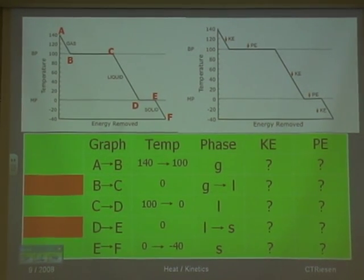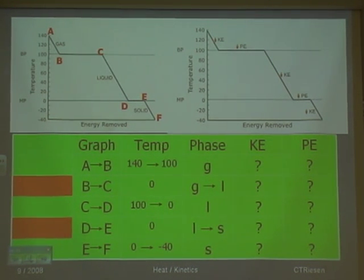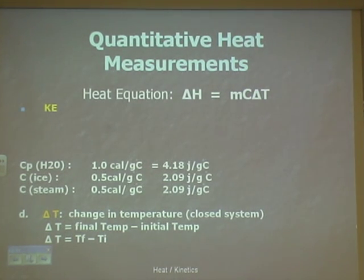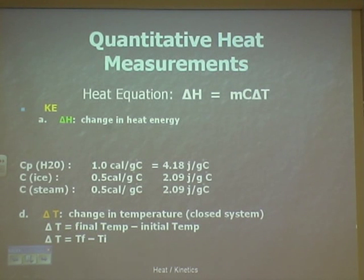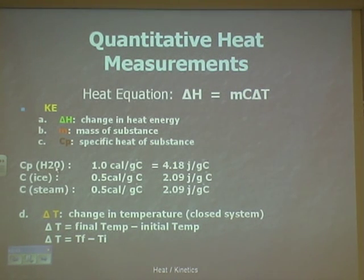We can also do a mathematical calculation. Kinetic energy is always determined by mass times specific heat times the change in temperature — that's the equation. Delta H is the change in heat. Mass must be included — that's the difference between heat and temperature. Then we have the specific heat of a substance. For water, the specific heat is 1 calorie per gram per degree Celsius, or we can convert it to joules. Ice is one-half calorie per gram degree Celsius.